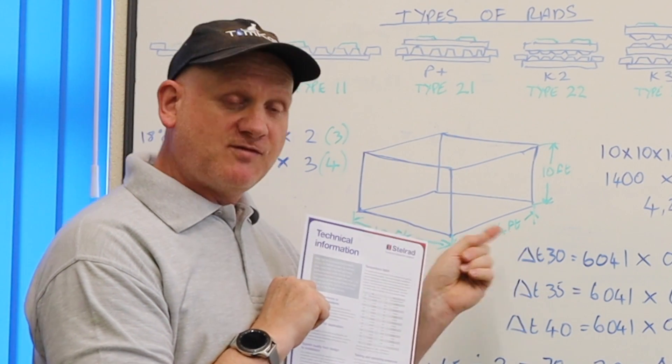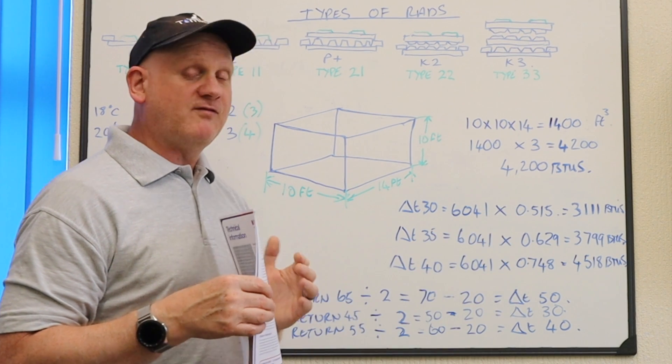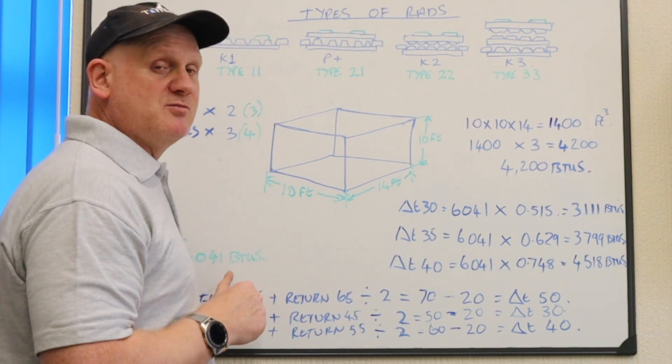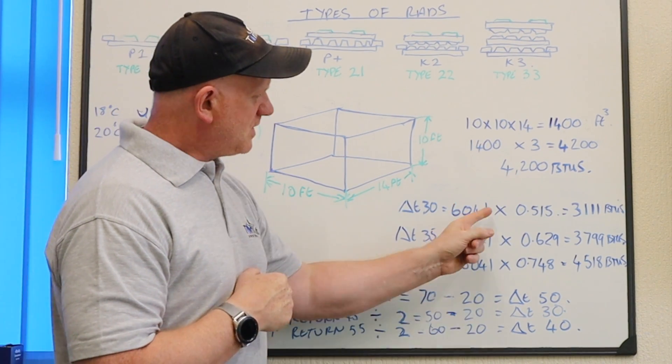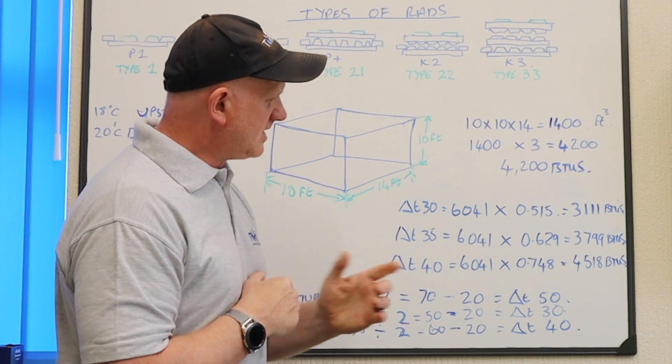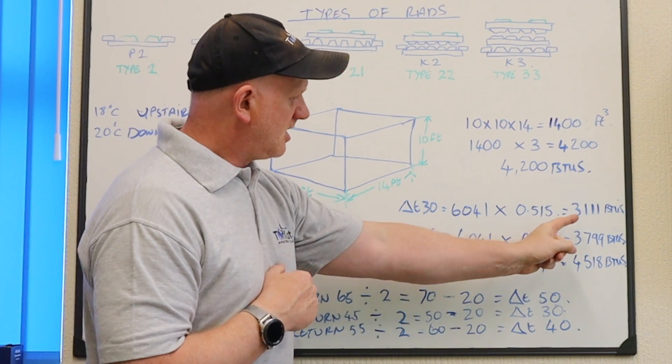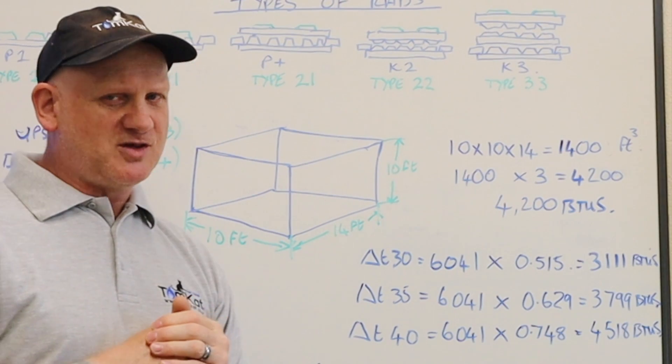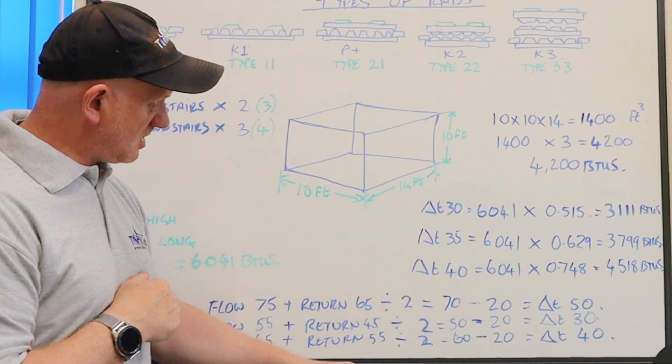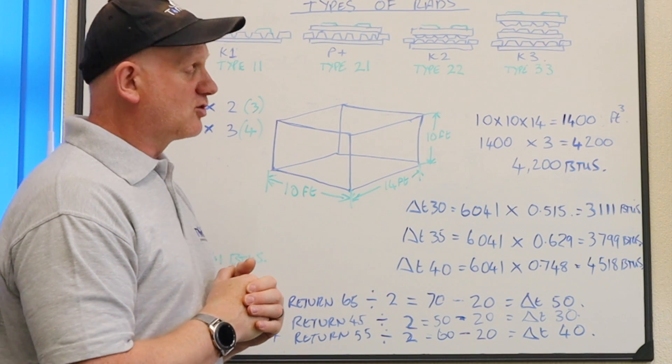Now we take our radiator BTUs, not our room. So our radiator BTU is 6041. We times it by this figure, 0.515. That gives us an output now with a low flow temperature. So our 55 degree flow temperature of 3111 BTUs. But I need 4200. So a delta T of 30 is no good to me. So this flow temperature of 55 degrees ain't going to happen. It's going to be cold in this room.